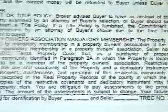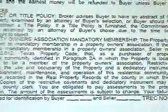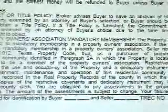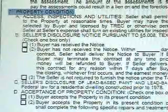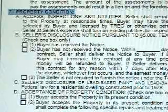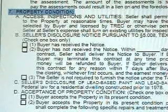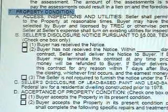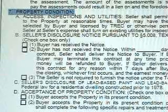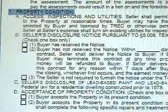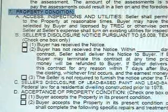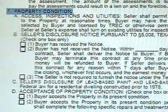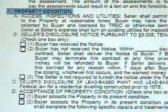Paragraph 7 covers property condition. This paragraph allows the buyer to have an inspection performed on the property by a licensed inspector. The seller disclosure notice should have already been received by the buyer prior to them making an offer. The buyer can back out of the contract up to 7 days after receiving the notice or prior to the property closing, whichever occurs first.